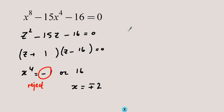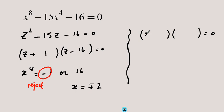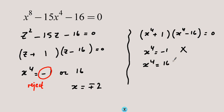You may even factorize without introducing z at all. Writing x to the 4 directly in the factored form, you get (x to the 4 plus 1)(x to the 4 minus 16) equals 0. You can conclude x to the 4 equals negative 1, which is rejected, leaving x to the 4 equals 16, thus x equals plus or minus 2.